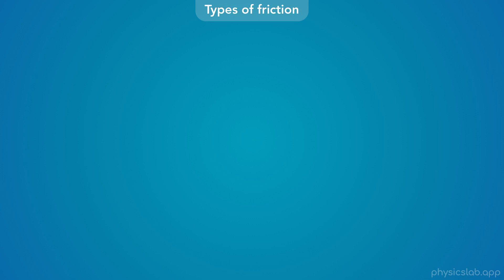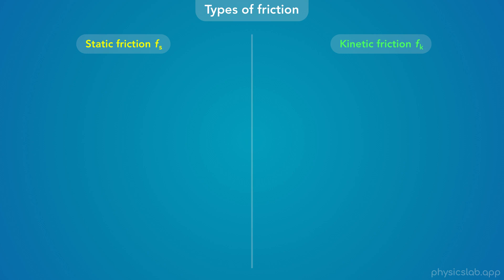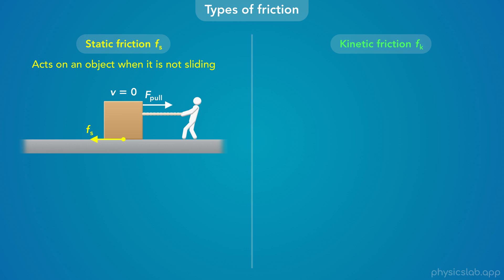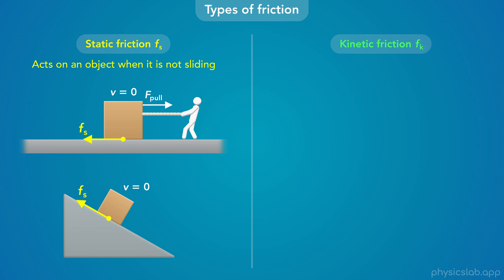The last thing to mention in this video is the different types of friction. We're mostly just going to use static friction and kinetic friction, and we'll use the subscripts S and K to label each one. Static friction acts on an object when it is not sliding along a surface. So if you pull on this box to the right but it doesn't move, then the ground must be exerting a static friction force on the box to the left. Or if this box is sitting on an incline but it doesn't slide down, then the incline surface must be exerting a static friction force on the box in that direction. Remember, a friction force is always parallel to the surface that the object is in contact with, and this static friction force is preventing the box from sliding down.